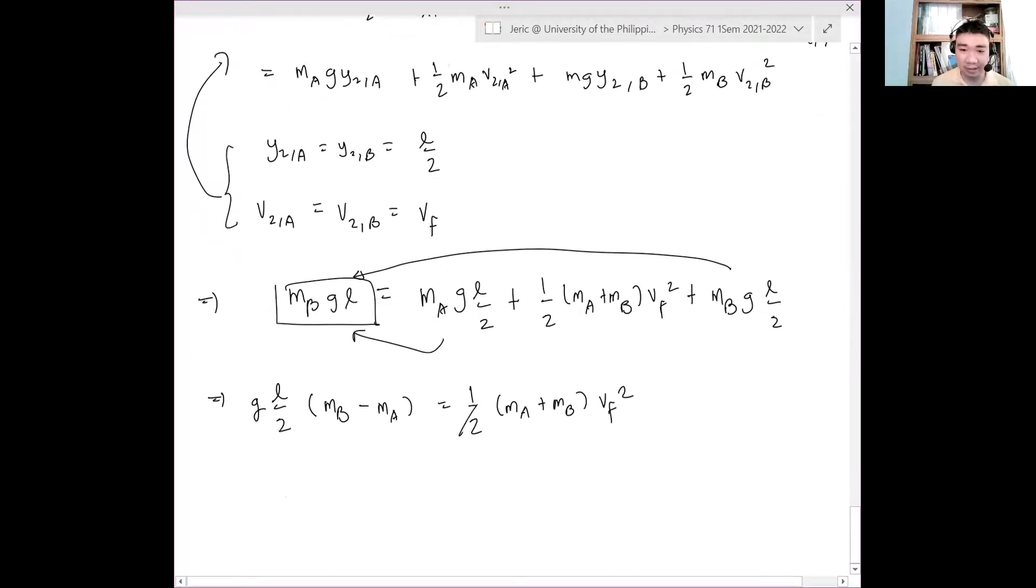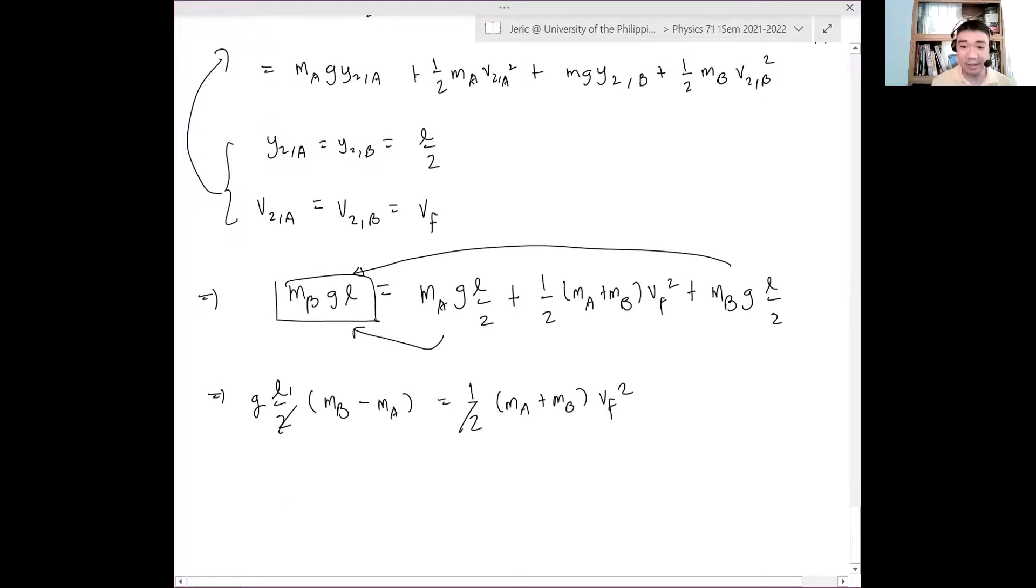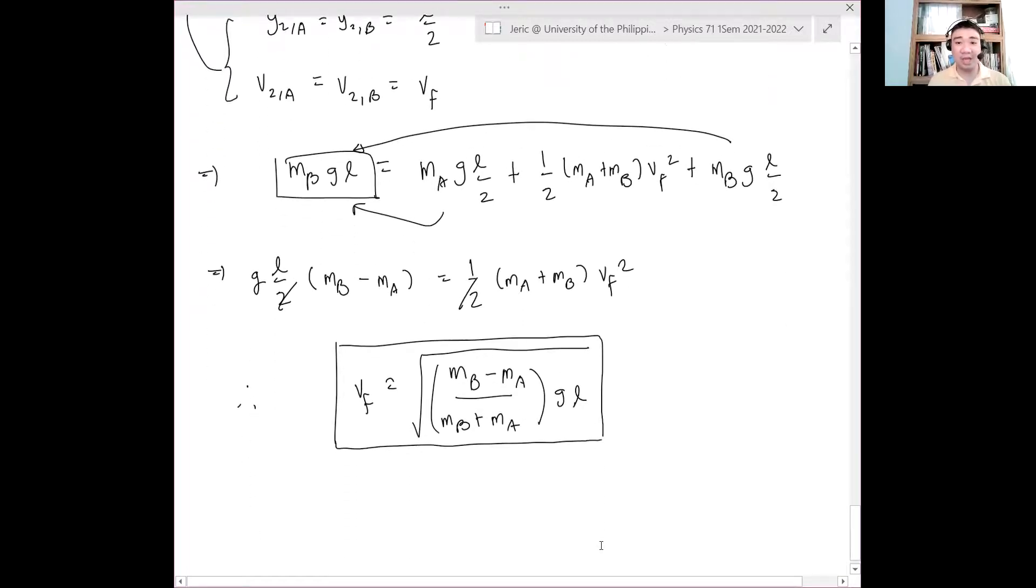Now I'll move these two terms because they both have g and L. And I'll get something like g L over 2 quantity MB is positive, this is larger, so I have MB, but when I move MA to the other side it becomes negative, minus MA, equals one half quantity MA plus MB quantity v final squared. The one half will cancel, and hence the final velocity is just equal to square root of MB minus MA all over MB plus MA, quantity g L in the square root. That is the final answer for the velocity of the system at the middle.